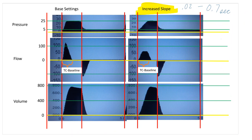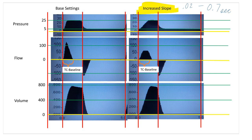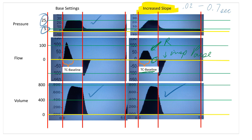By increasing the slope from 0.2 to 0.7 seconds, our inspiratory flow was dramatically reduced and smoothed out. You'll notice our time constant — the time to reach equilibrium — was expanded, so we actually have a decreased inspiratory pause, giving less time for distribution of ventilation. We're still achieving pressures of 25 over 5 and the same pressure gradient. Because we still reach equilibrium between mouth and lung pressures, tidal volume is maintained, but inspiratory flow has been decreased and softened.